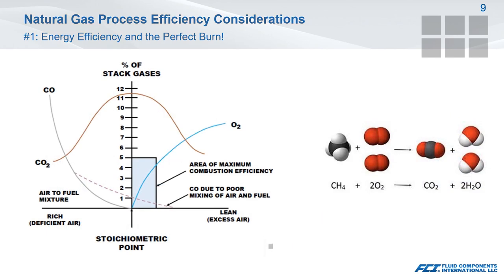Ideal operation occurs at the stoichiometric point, and the highest efficiency occurs in the blue zone to the right. Operation to the left of the stoichiometric point results in incomplete gas combustion and production of carbon monoxide, with a greatly lowered efficiency and presence of unburned gas in the flue gas. Operation to the right results in excess air, which is heated by the flame and carried out in the flue gas, resulting in efficiency loss. The excess oxygen also results in an increase in NOx production. Mass flow measurement of both the natural gas and air feeds will account for changes in gas pressures and temperatures not accounted for in pure volumetric measurements, allowing you to better keep your efficiencies within the blue zone.